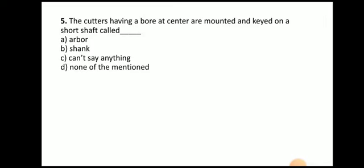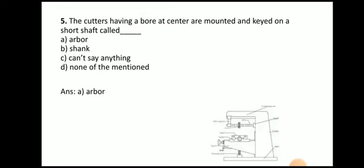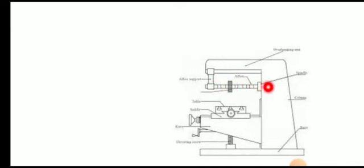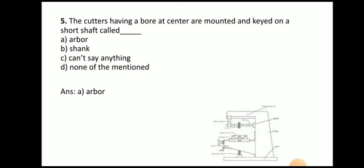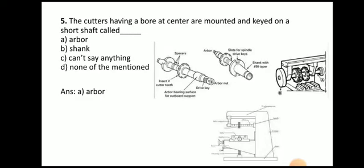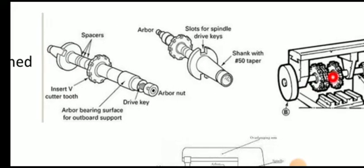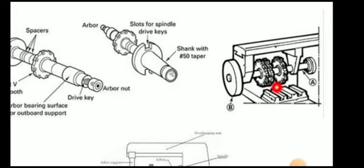Next question: the cutter having a bore at the center are mounted and keyed on a short shaft called — arbor, shank, can't say, or none of the mention. The answer is arbor. Here you can see a horizontal milling machine where the milling cutter is mounted over the arbor, which is a shaft-like structure. You can mount multiple cutters over the arbor.